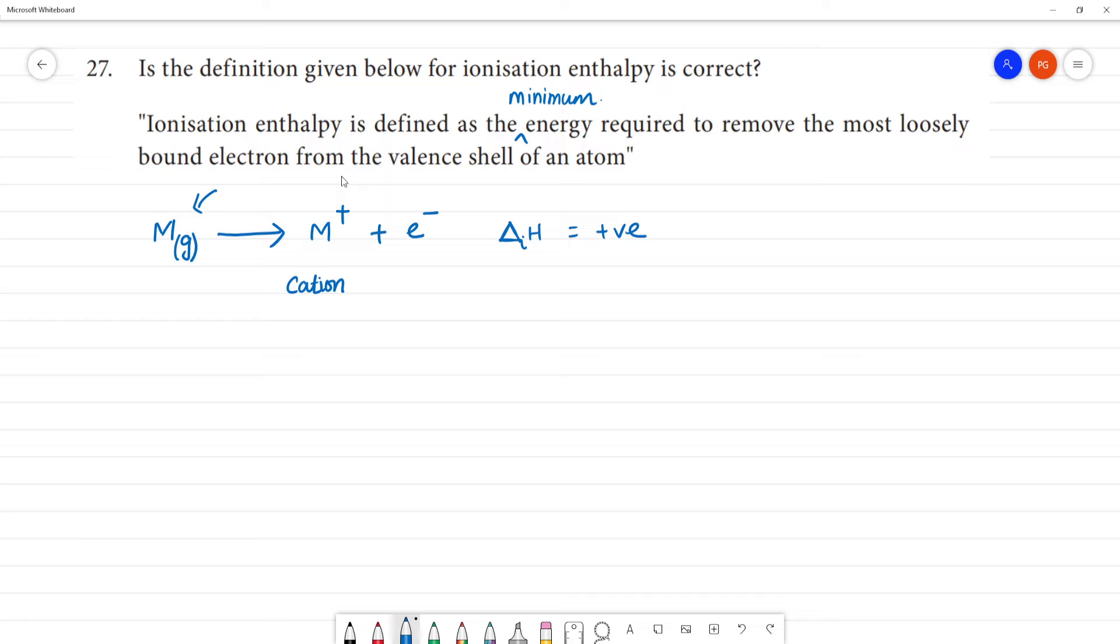When we remove an electron from the valence shell of an atom, we're removing the most loosely bound electron, not from an inner shell.